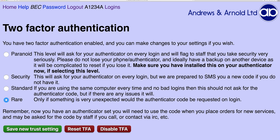And it says two-factor authentication — you now have it enabled and you can make changes to your settings. There are several settings. You probably want something like standard, or maybe security to ask every time. You can set a paranoid mode. If you do that, you will not be sent the code by SMS again, and our staff will know you selected this, so they will be very cautious if you phone up, email, or ask them on IRC, and they will ask you to supply a code so that they can be sure it's you.